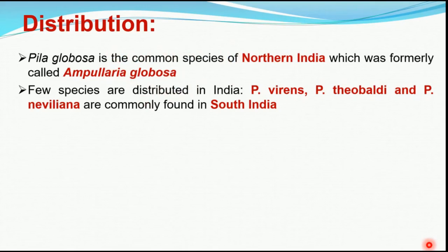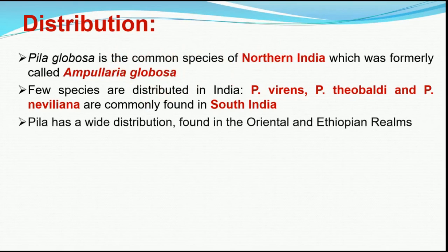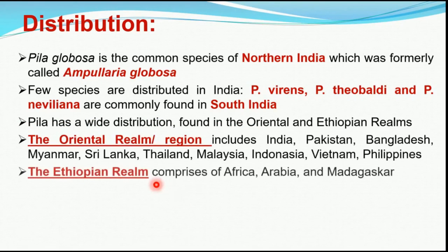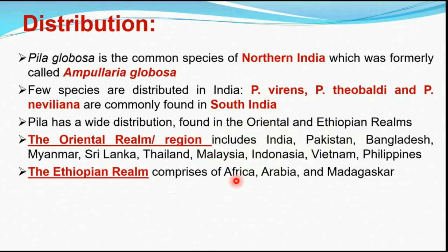Pila has wide distribution and is found in two geographical regions: the Oriental and Ethiopian regions. The Oriental region includes India, Pakistan, Bangladesh, Myanmar, Sri Lanka, Thailand, Malaysia, Indonesia, Vietnam, and the Philippines — all countries of the Indian subcontinent. The Ethiopian realm comprises Africa, Arabia, and Madagascar. In all these areas you will find the distribution of Pila globosa.